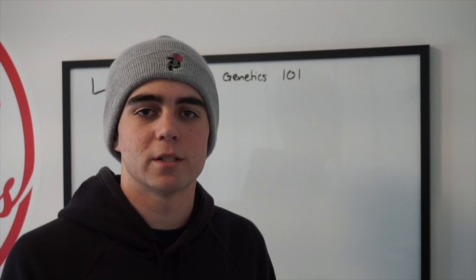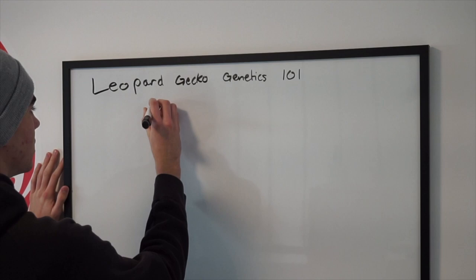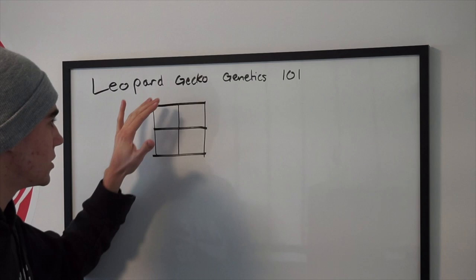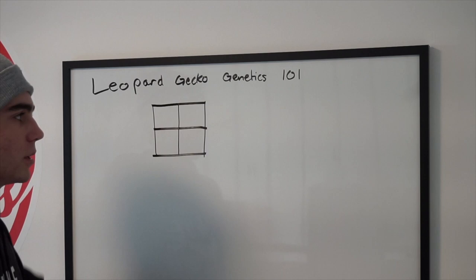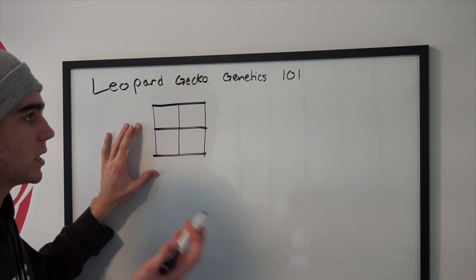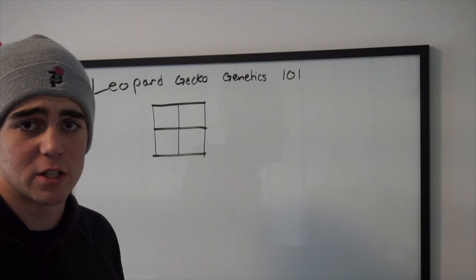Alright, Leopard Gecko Genetics 101. We're going to go over something incredibly simple called a Punnett square. Essentially, a Punnett square is just a normal square that you would set up like this — a little box with four little windows. What you have here is you put the genetics of the male or female, parent one and parent two, one on the top and one on the side, whichever two corners you'd like, so you can tell them apart. And essentially, whatever genetics the parent gecko would have for a given trait, you put those right here. We're going to use letters to express genes.